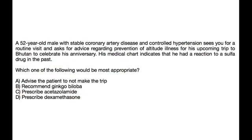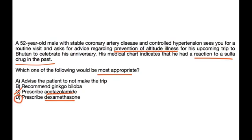Vignette three: A 52-year-old male with stable coronary artery disease and controlled hypertension asks for advice on prevention of altitude illness for his upcoming trip to Bhutan. His chart indicates a reaction to a sulfa drug in the past. Which would be most appropriate? Since prophylaxis uses acetazolamide or dexamethasone, but he is allergic to sulfa — making acetazolamide contraindicated — the correct option is dexamethasone.